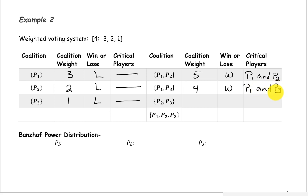Next, the coalition containing players 2 and 3 has a weight of 2 plus 1, or 3. This is a losing coalition, and so we don't need to worry about critical players.